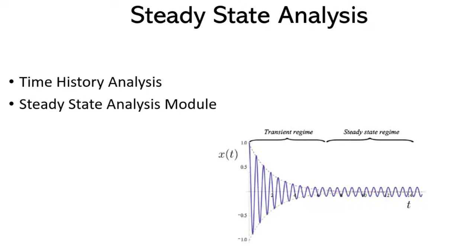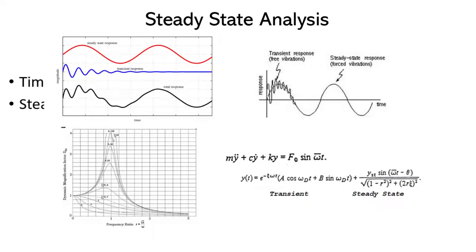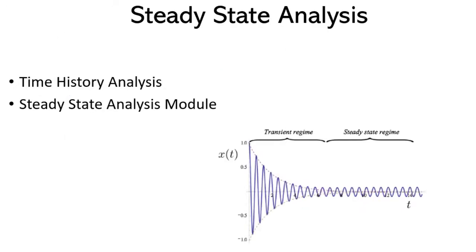If we only want to capture the dynamic response at, say, 30 Hz, we can define it easily in time history analysis. But if you want to check for the entire frequency range, that's not possible in time history analysis. For that, we have a dedicated module called the steady state solver. This program captures only the steady state part — not the transient part, which eventually decays — making the solution much simpler and faster.